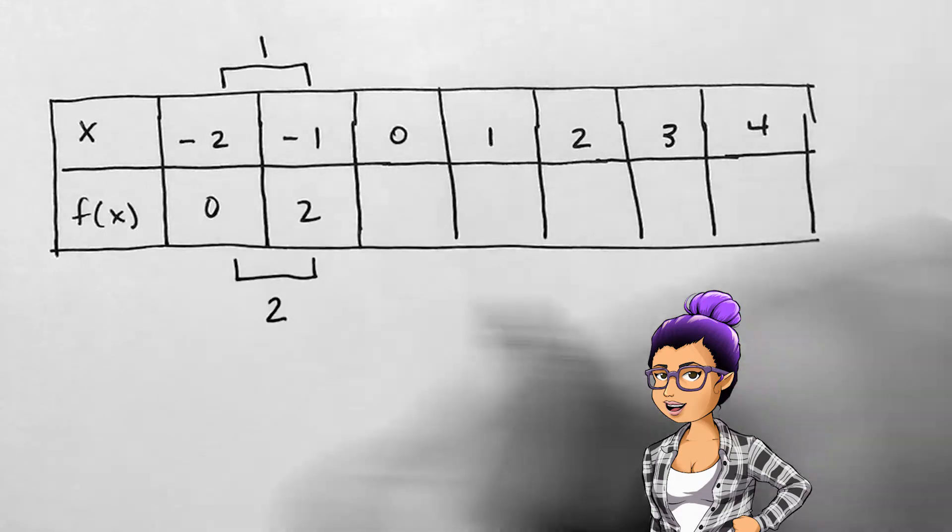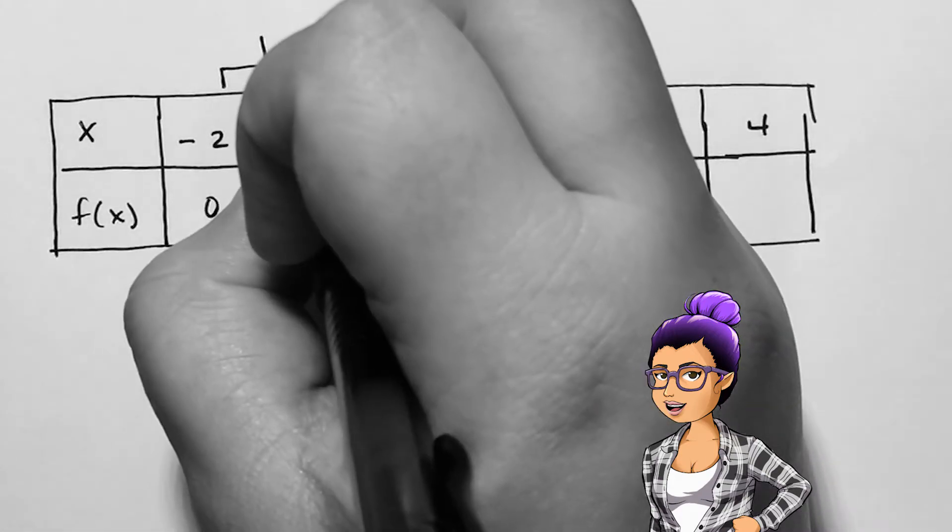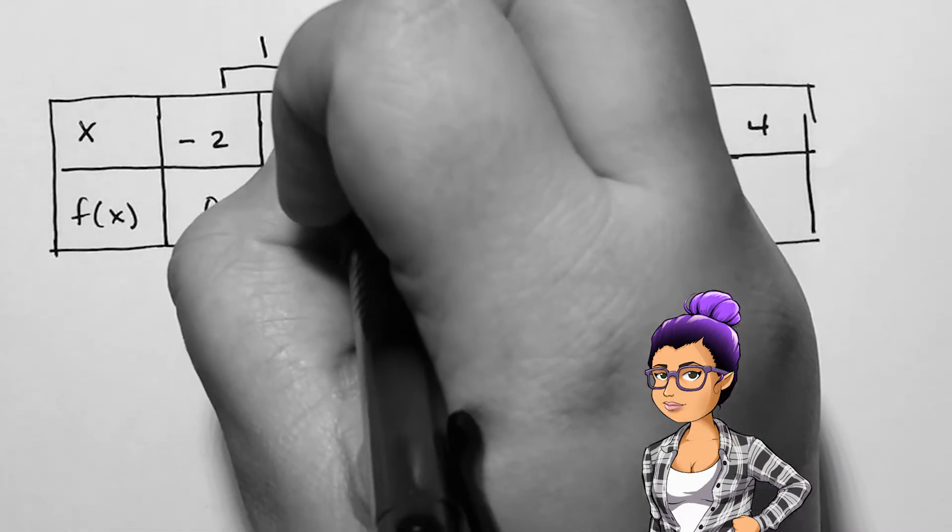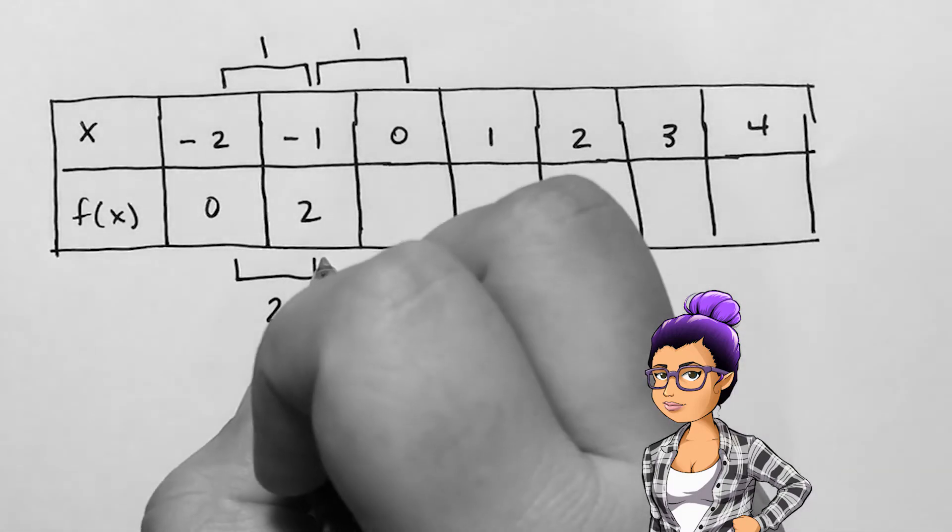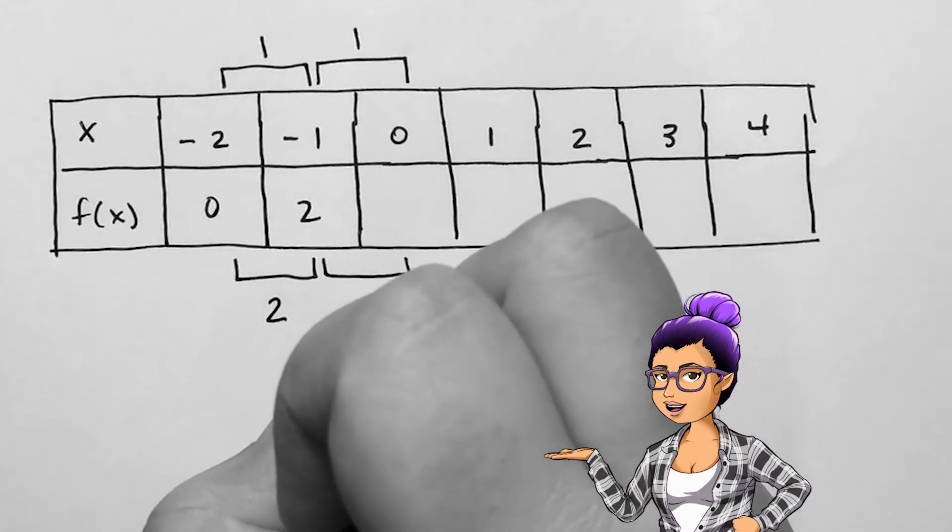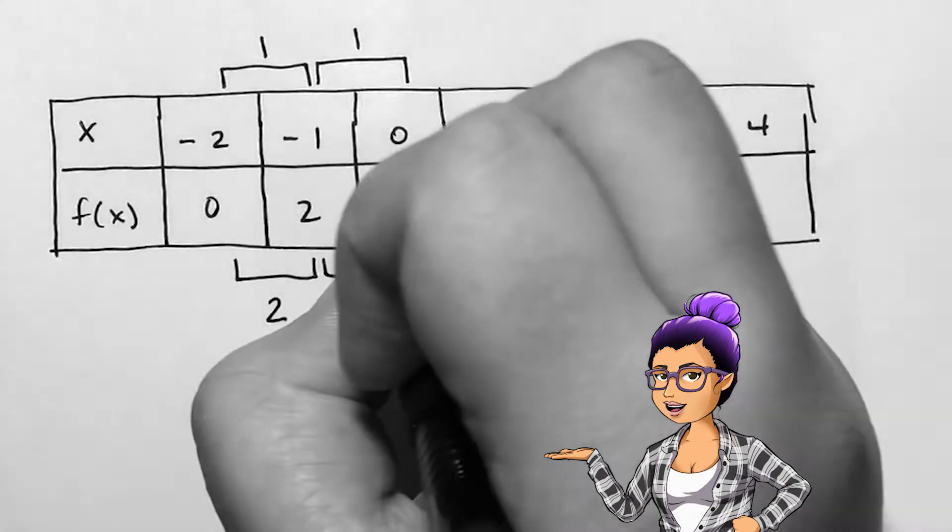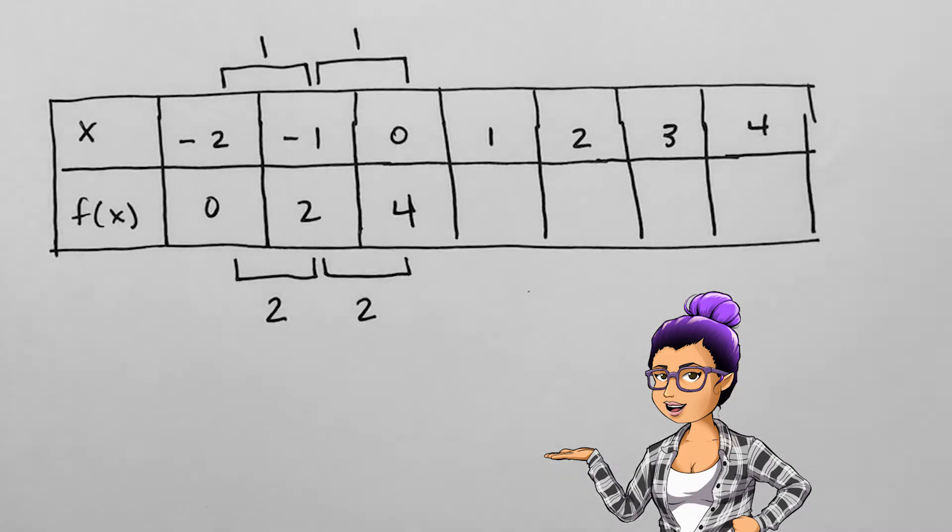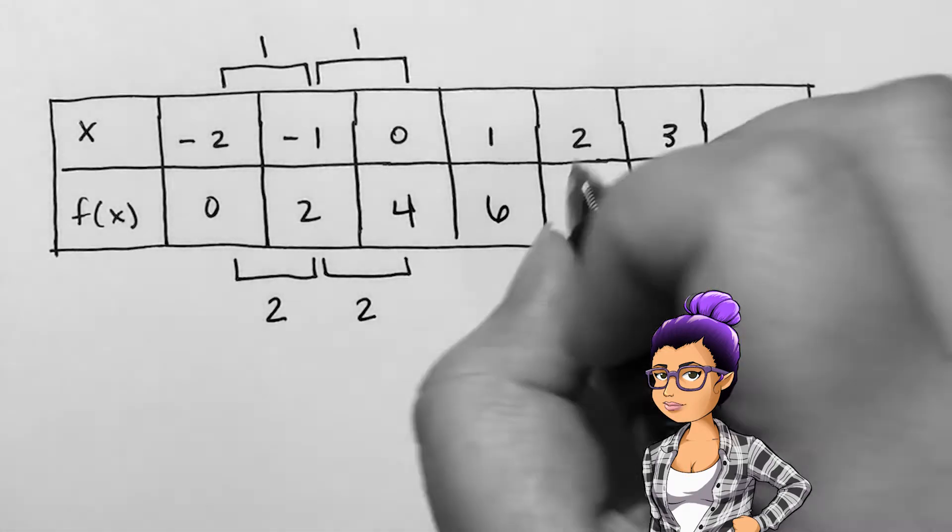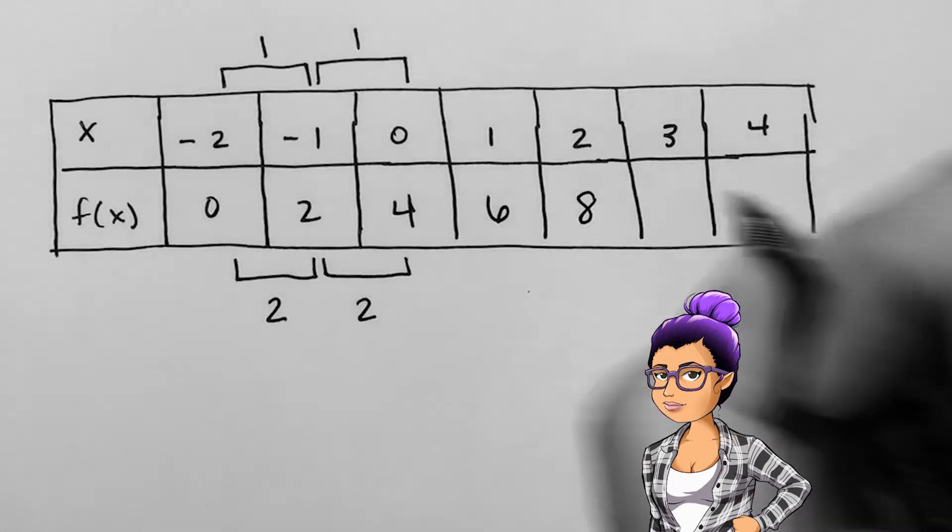Since a linear function has a constant rate of change, that slope, and this table has the outputs go from 0 to 2 when the inputs move to the right by 1, moving to the right by 1 more input will have the outputs increased by 2 again, giving us 4. Moving again gives us 6, then 8, 10, and 12.